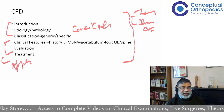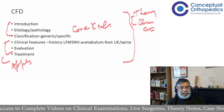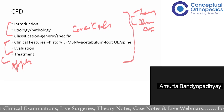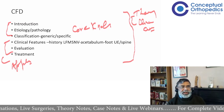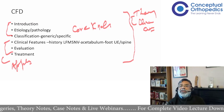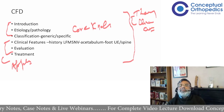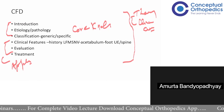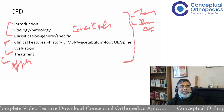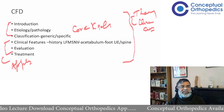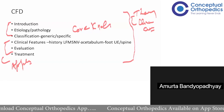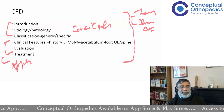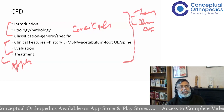Let's say a child comes to you and the parents present with a history that the child was born with a significantly short leg. What diagnoses go through your mind? It's a congenital shortening - the significant shortening has to be from a long bone; it can't be from a tarsal bone or a joint abnormality. So the three main things are femoral deficiency, fibular deficiency, or tibial deficiency.